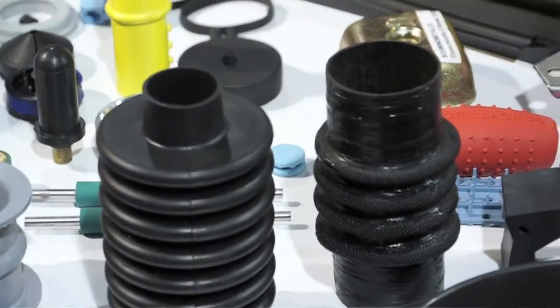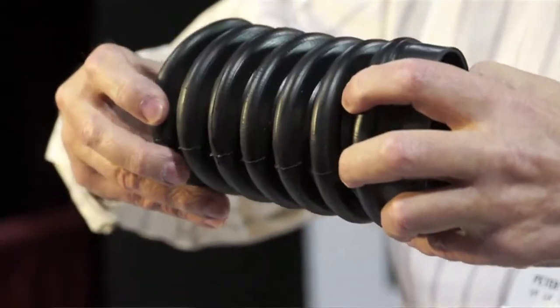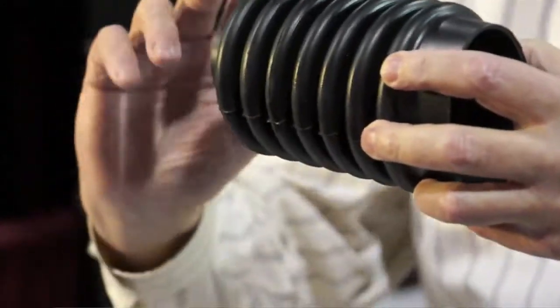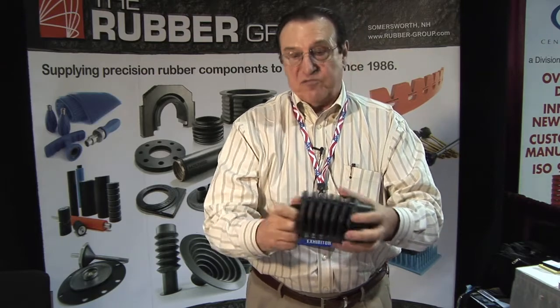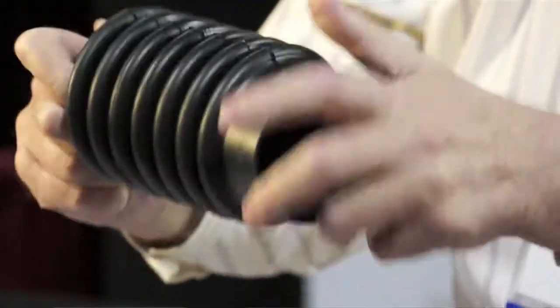These are rubber bellows used as dust covers. Equipment that moves back and forth if you will, and these are connected at both ends depending on what the size of the piping is, and it prevents from any leakage or any dust getting into your pipe.